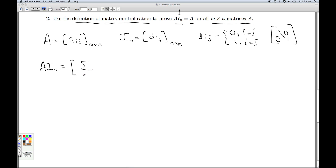By definition, this is the sum, k equals 1 to N because that's the number of columns of A and that's the number of rows of Iₙ. A_ik D_kj. And this resulting matrix will be an M by N matrix because of how it's defined. Now let's take a look at this sum.